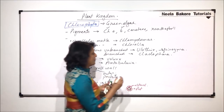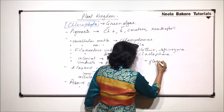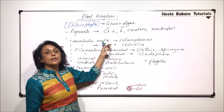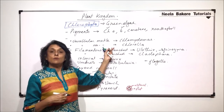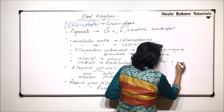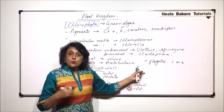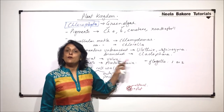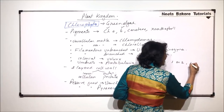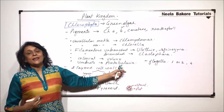Coming to another important structure — flagella. Green algae can be flagellate. Since some are motile and some non-motile, if they are motile they have flagella, and the number varies from one or two. But there can also be structures where four flagella are found. So one or two is normal, and sometimes four flagella are also present.